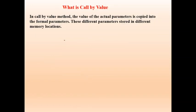Now, call by value. If a function is called and simply an actual copy of the parameter is passed, we call it as call by value. In this, formal parameters get replaced by actual parameters. These formal parameters will be stored in one memory location, and the actual parameter will be stored in another location. When a function call is made, it just passes the copy of the values.